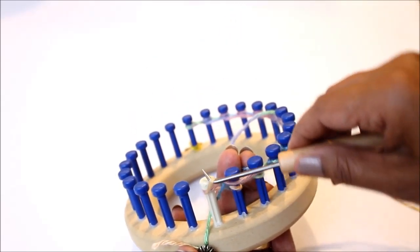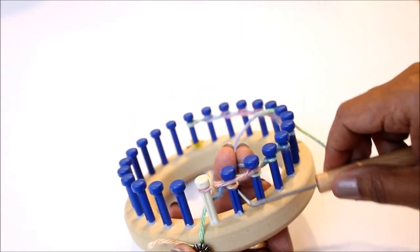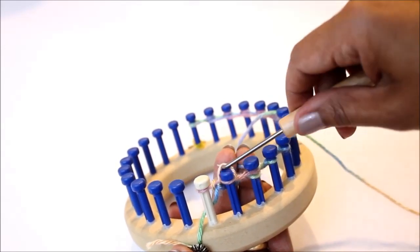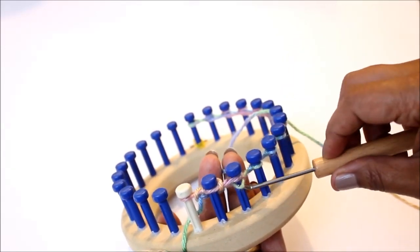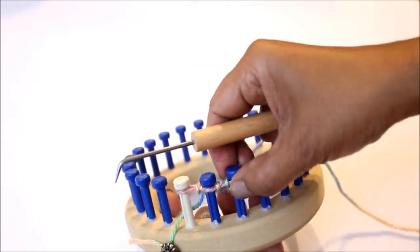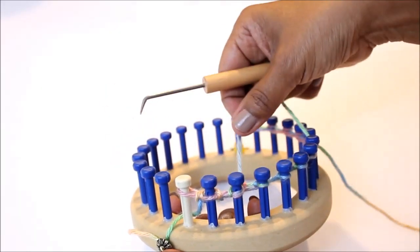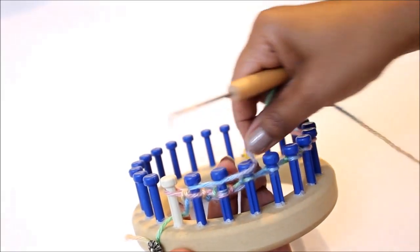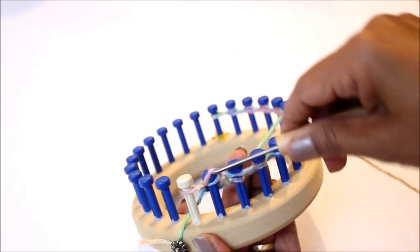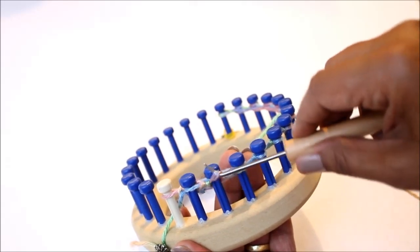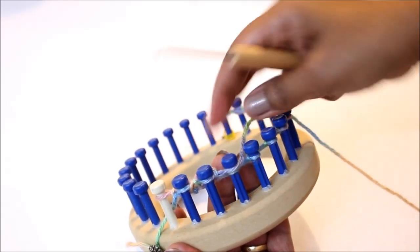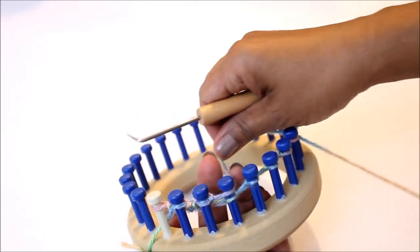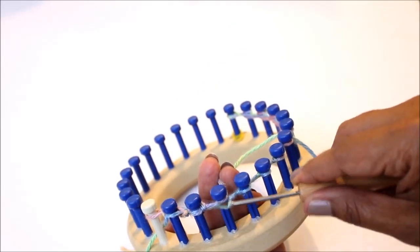Knit off and now wherever your working yarn is from this point on, when you stop, that is your new peg two and you start the process again. You go from behind peg one and come forward and wrap pegs one, two, and three and then you knit off in that order one, two, and then three and you do that because it gets tight if you do it the other way around.